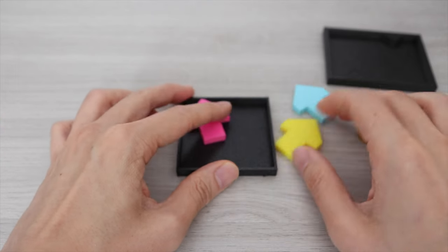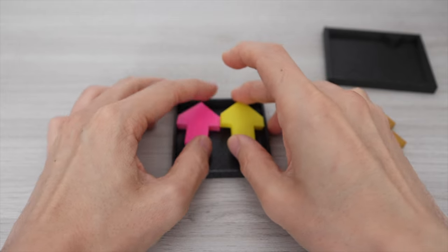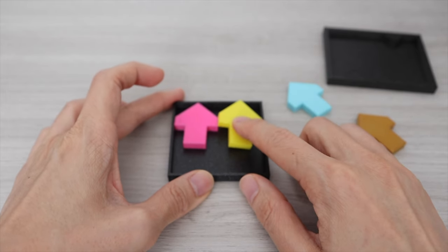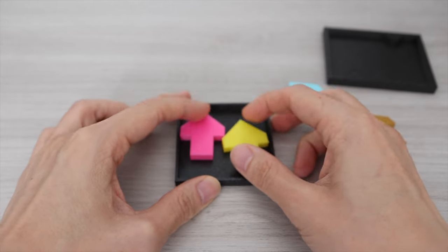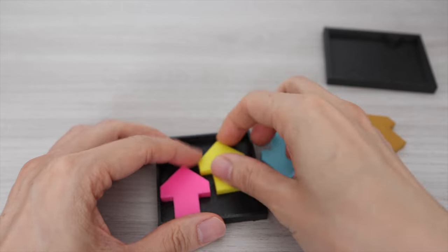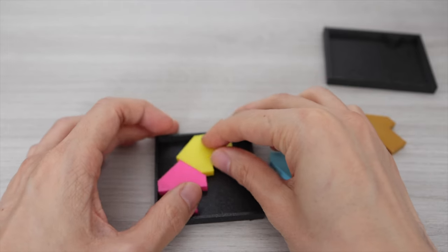We can start with placing the arrows like this pointing towards the sides. Two arrows will fit perfectly side by side like this. The third arrow can go in like this but then there will be no space for the fourth arrow.